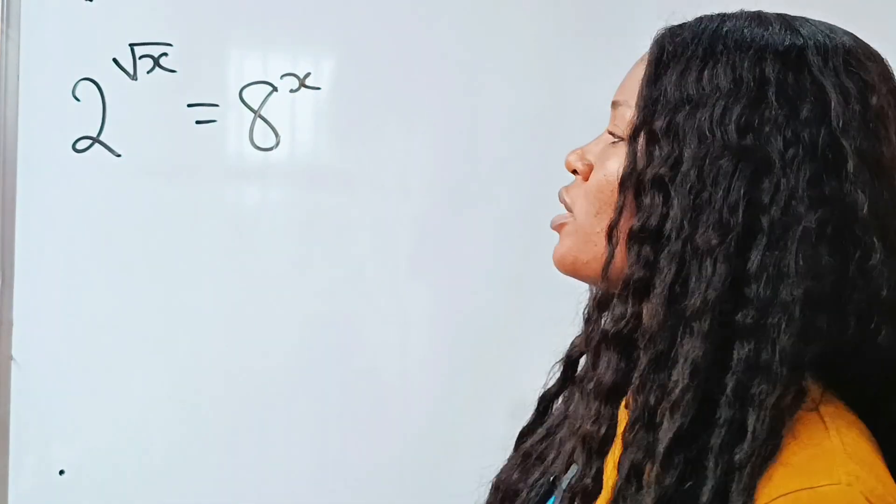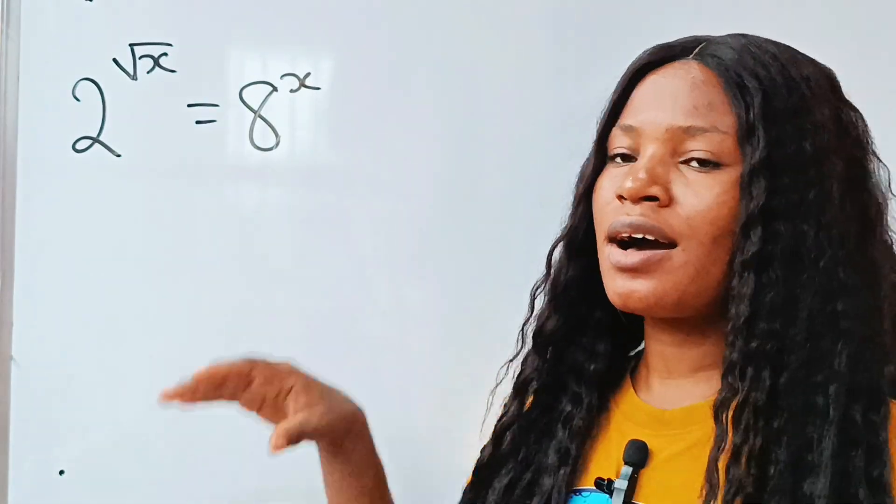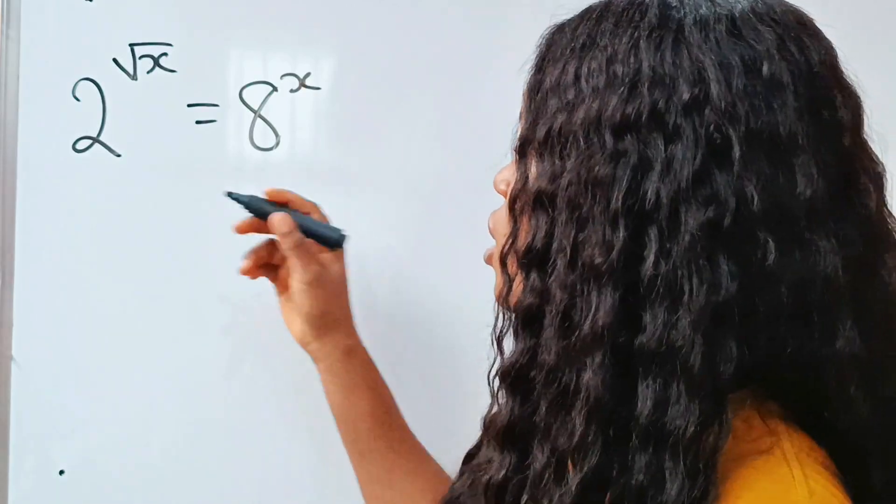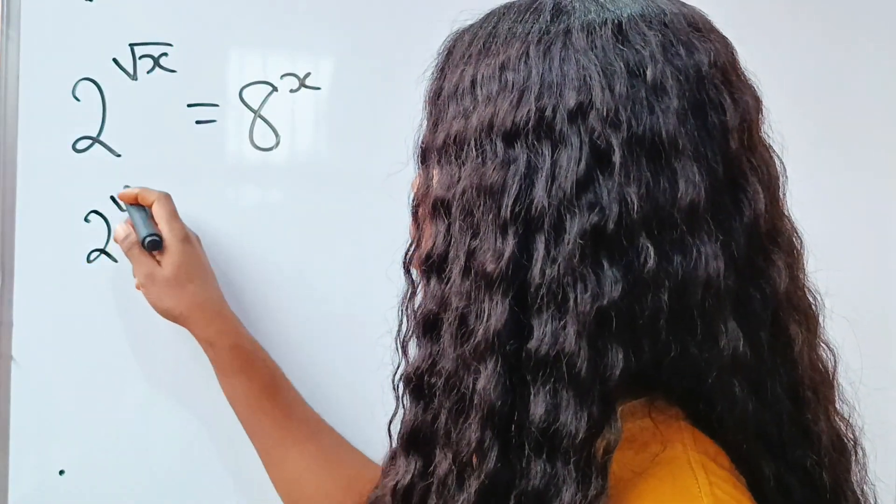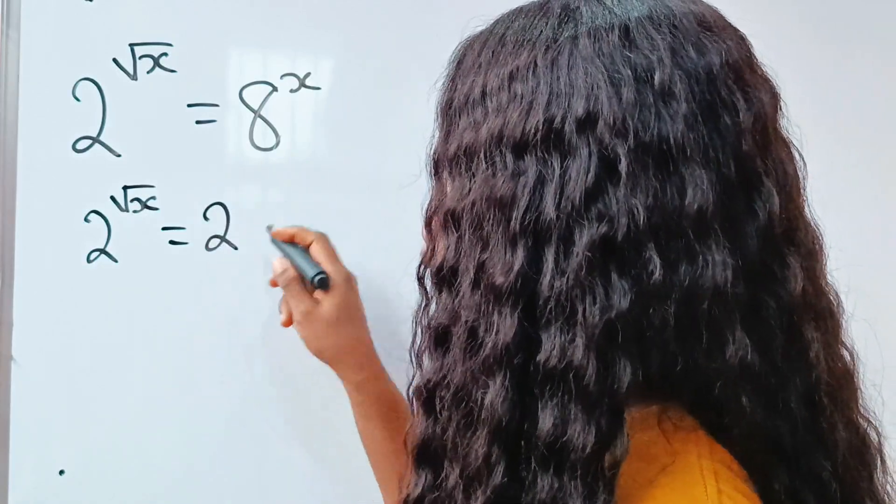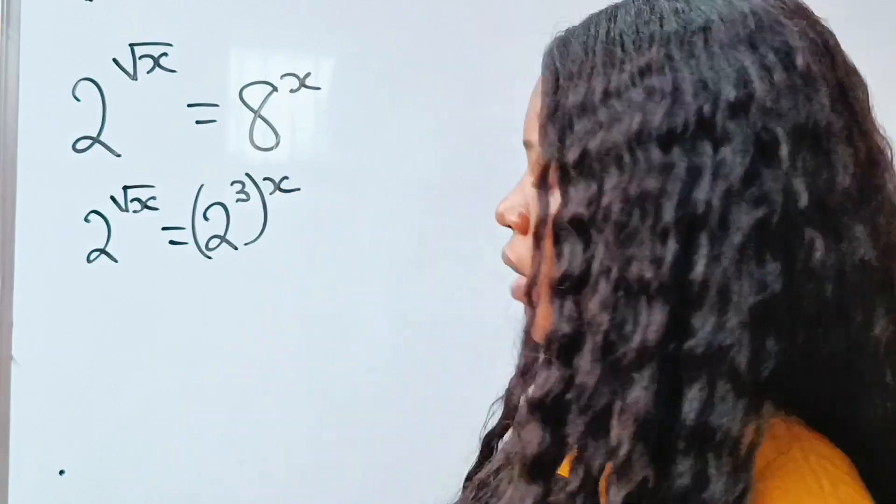So this question is under exponents. Let's go ahead and put them in the same base, that's the first thing we're supposed to do. So we have 2 to the power of square root of x is equal to 8, which can be expressed as 2 to the power of 3 raised to the power of x.